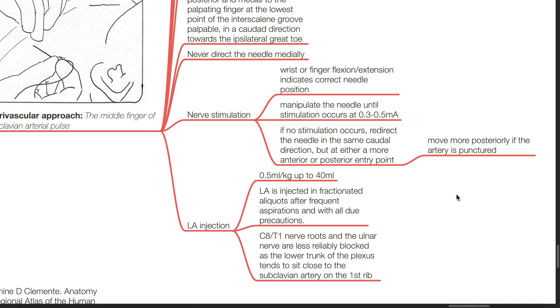Local anesthetic injection: 0.5 mL per kg up to 40 mL, not exceeding the maximal dose. Local anesthetic is injected in fractionated aliquots after frequent aspirations and with all due precautions. C8 or T1 nerve roots and the ulnar nerve are less reliably blocked as the lower trunk of the plexus tends to sit close to the subclavian artery on the first rib.